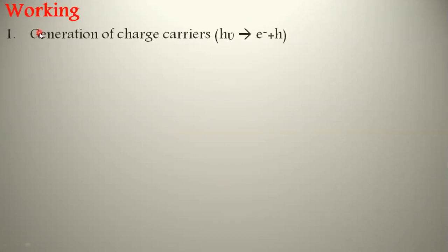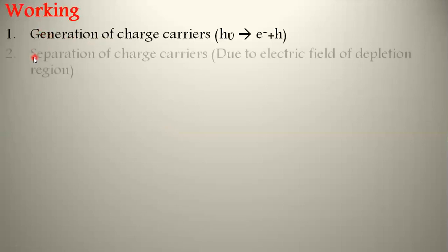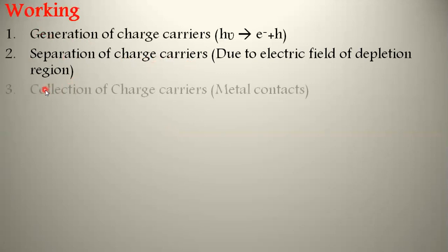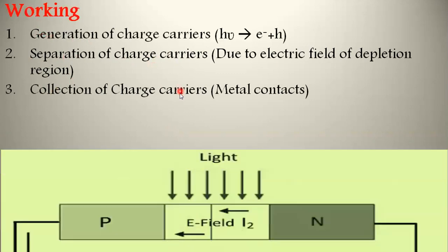Coming to the working: when light falls on the solar cell, EMF is generated across the cell. This is possible by three basic processes: generation of charge carriers, separation of charge carriers, and collection of charge carriers. We need to understand these processes clearly.